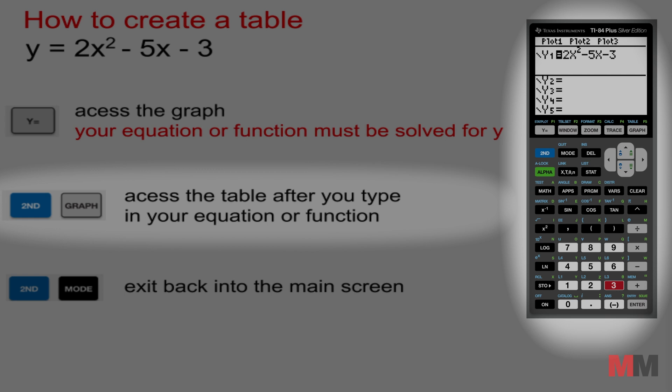To access the actual table you just press 2nd and this graph button right here, which will access a table of values that you could scroll up and down to so you can reach the negative X numbers. Now you can avoid plugging in all the X values to get your Y value, it's already made for you infinitely. You could scroll down to whatever number you want.